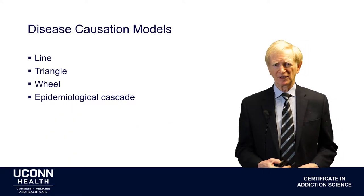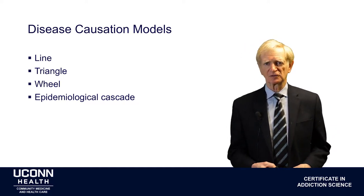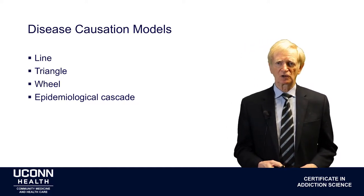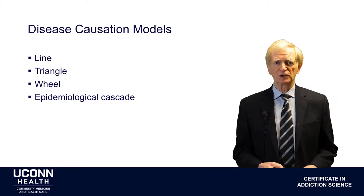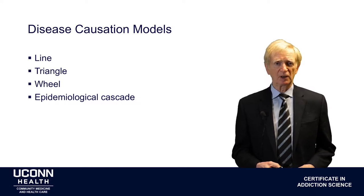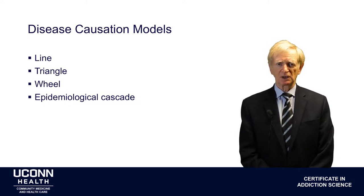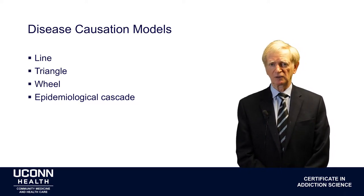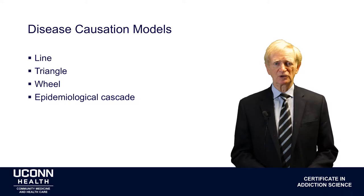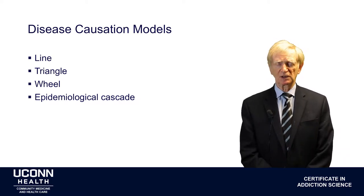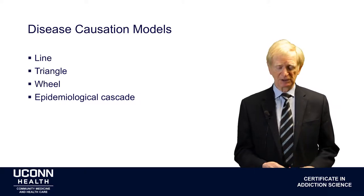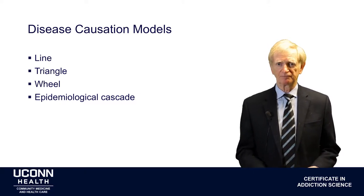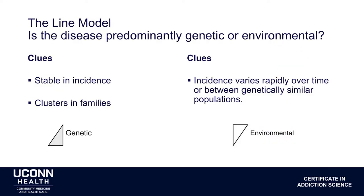There are a number of models that have been developed in the analysis of disease causation that can be applied to addiction. The line model, which is relatively simple; the triangle model, which you've probably heard about in terms of the public health agent, host, and environment model; the wheel model, which is a variant of that and takes into account these variables in a more complex way; and then the epidemiologic cascade model.